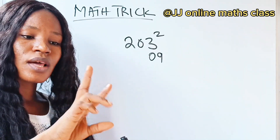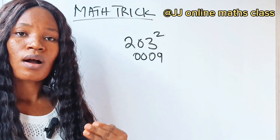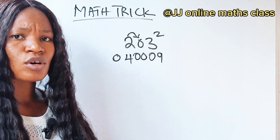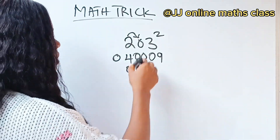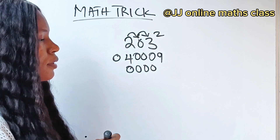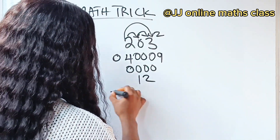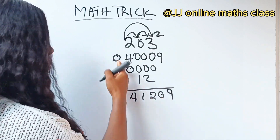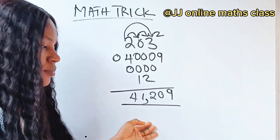Zero squared is zero — we need to make it two digits, so it's zero zero. Two squared is four — we make it up to zero four. Then two times zero is zero; double of that is still zero, so it's a two-digit number: zero zero. Similarly, zero times three is zero; double of that is still zero — two-digit number. Then two times three is six; double of that is twelve. We have 9, 0, 2, 1, 4 — the leading zero is of no use. So our solution is 41,209.